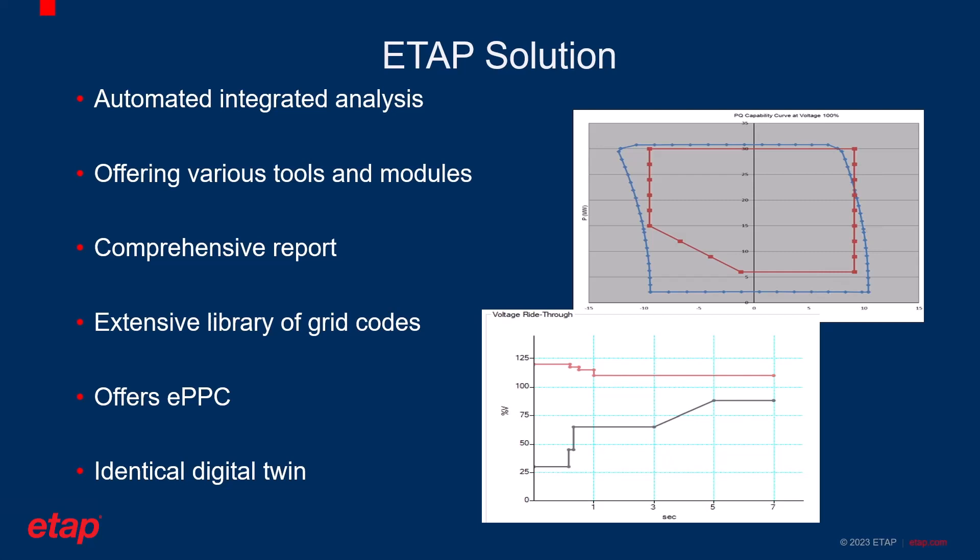Last but not least, ETAP uses the concept of digital twins and offers its own ePPC. Using ETAP's ePPC together with the grid code analysis provides a very comprehensive and integrated solution for power plants to conduct transient stability analysis and check if their power plant is meeting the grid code requirement, and if not, find potential solutions for it.